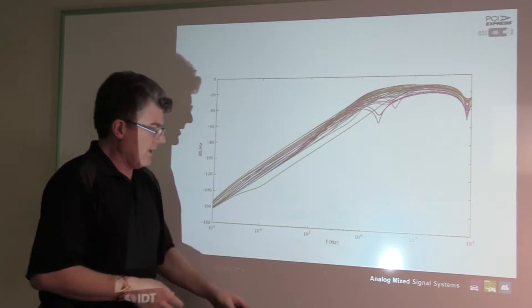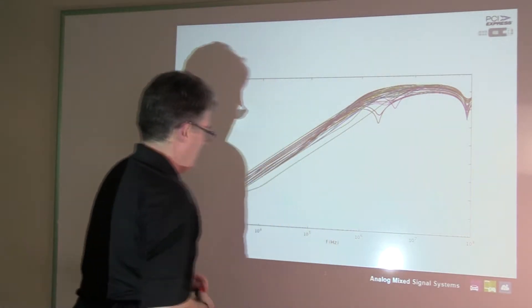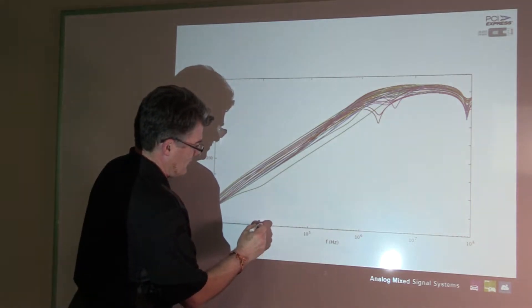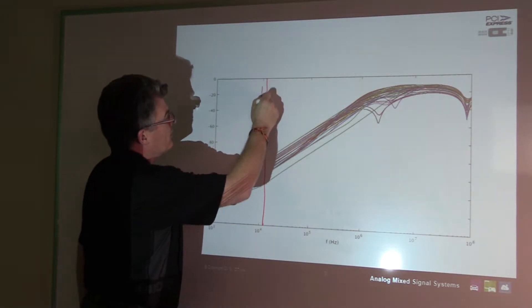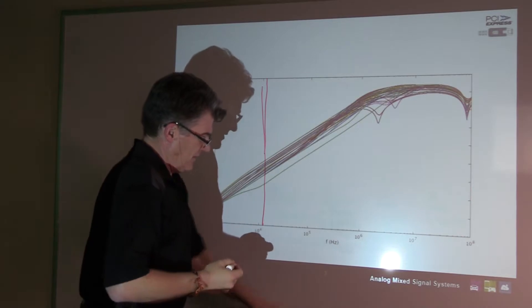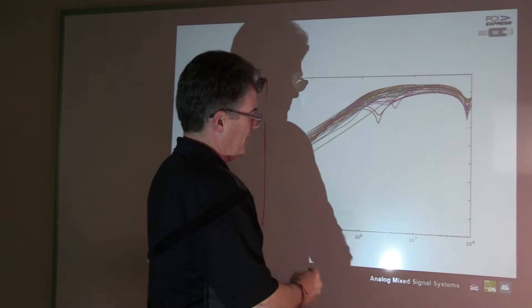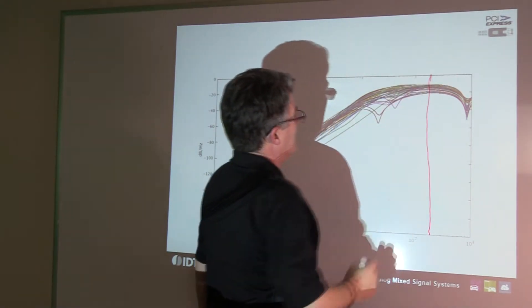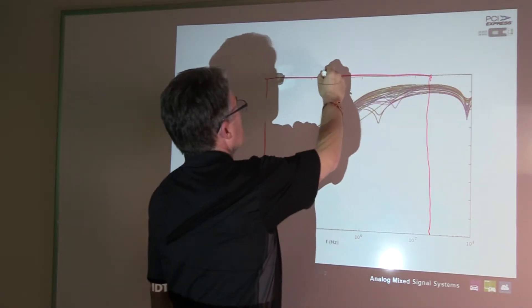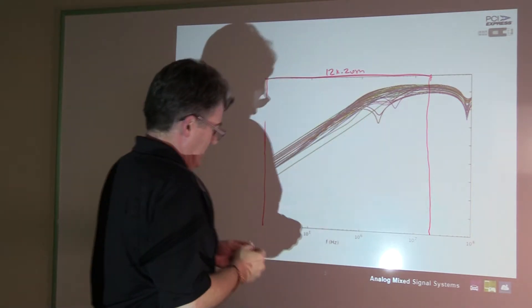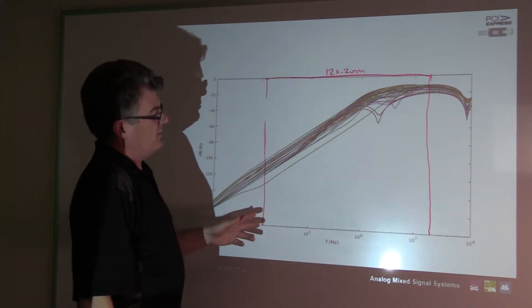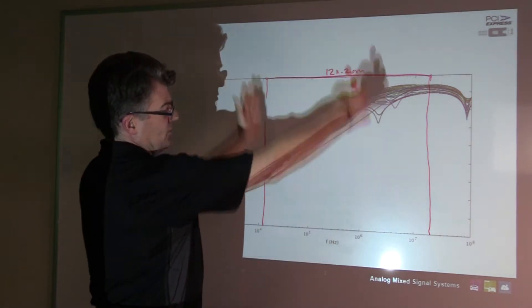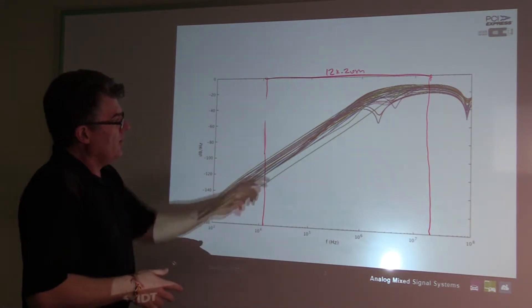What can we glean from this about what PCI Express might be sensitive to? First, let me draw this on the plot — here's 10 kilohertz, 100 kilohertz, and 12 kilohertz is right here. So a 12 kilohertz brick wall, if I draw a straight vertical line, looks like this — 12 kilohertz to 20 megahertz. Compared to the PCI Express filter, you can see that the 12k to 20 meg filter has no attenuation in the lower frequencies — actually no attenuation anywhere — it just drops right off at 12kHz to 20MHz.